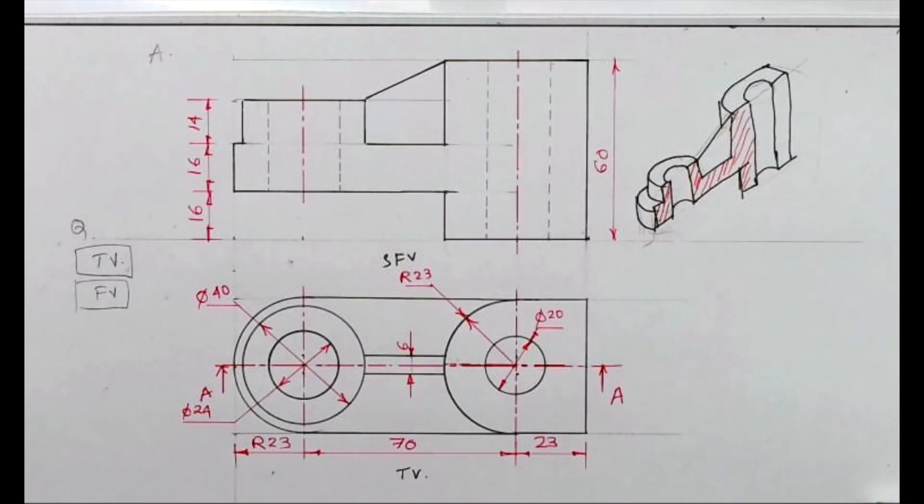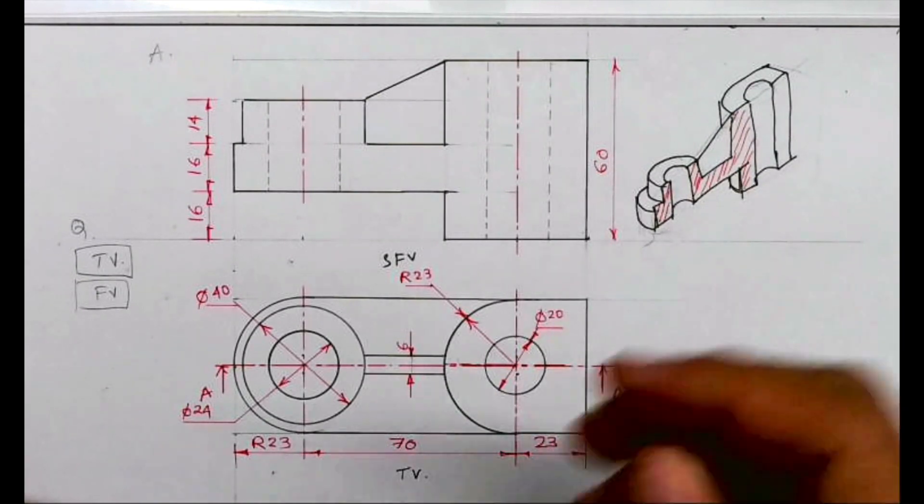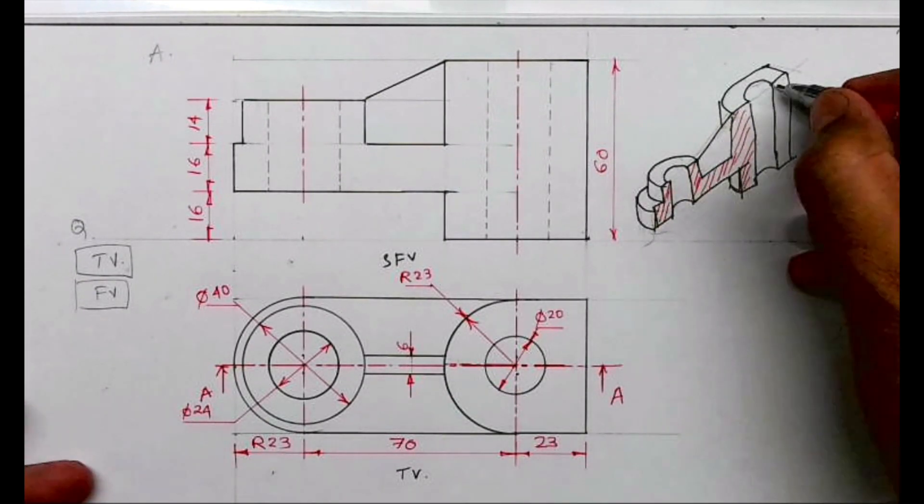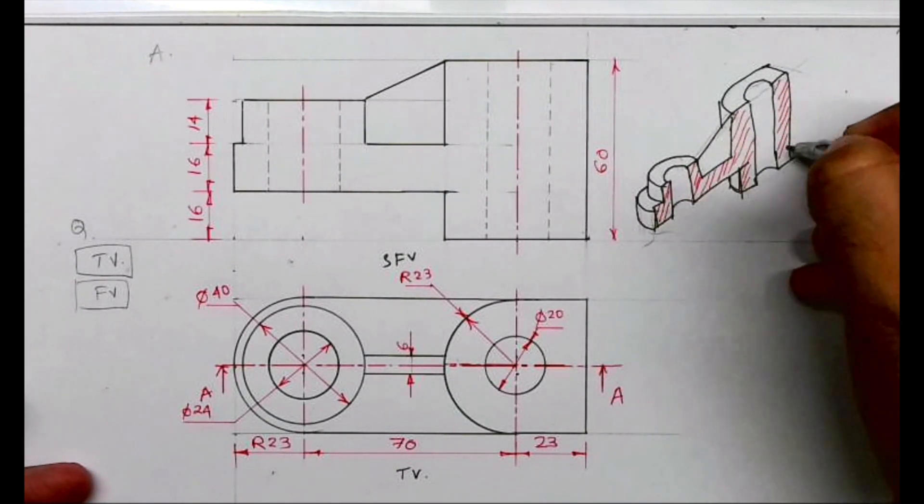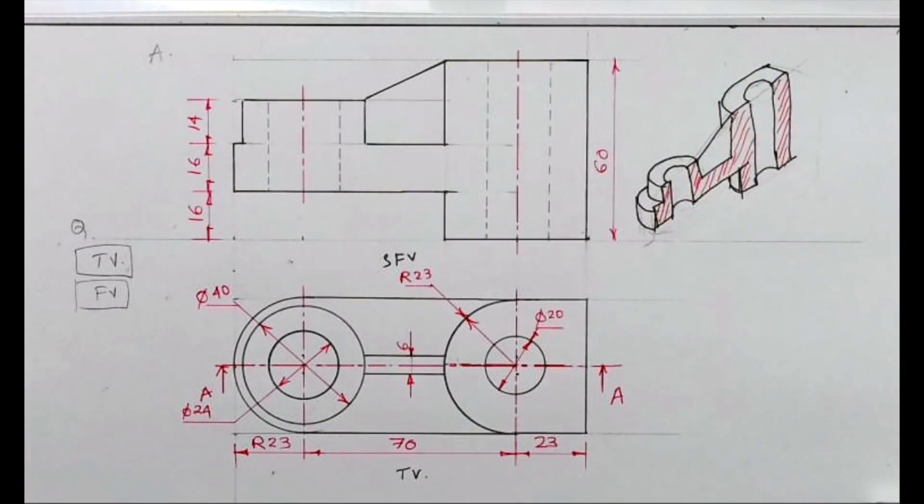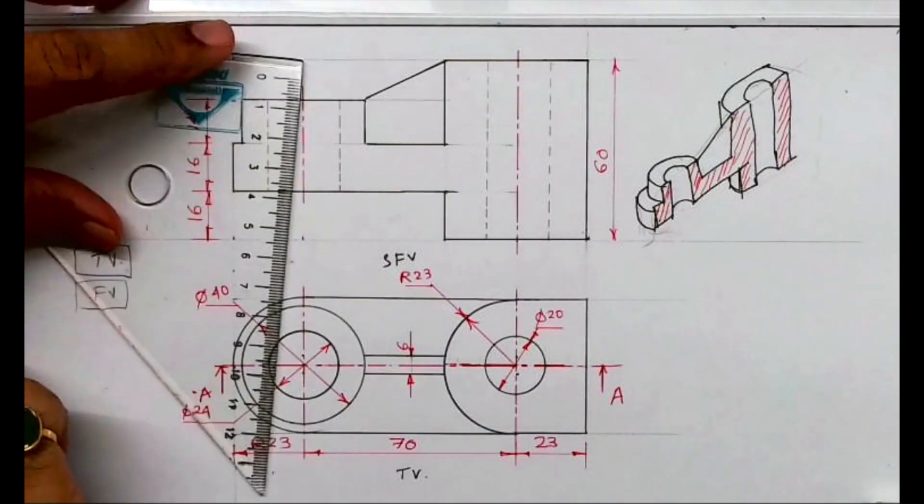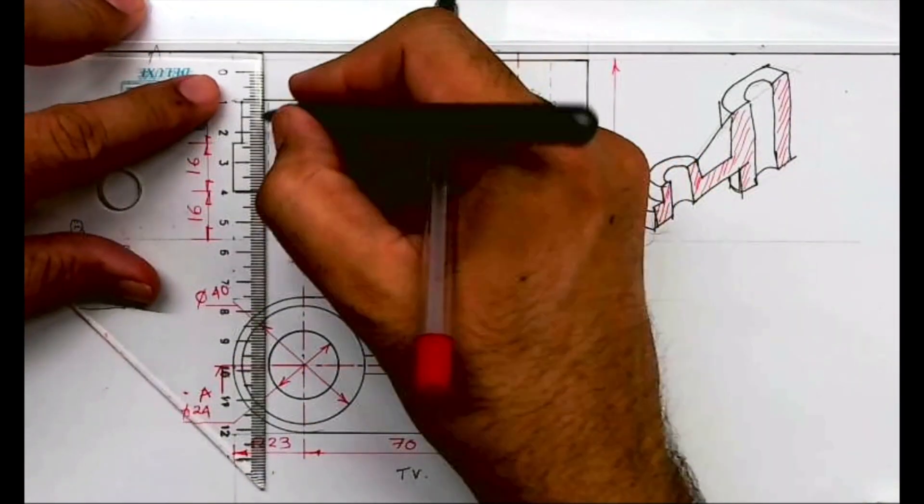This part will be hatched. So this is how sectional front view will appear. So what we can do is draw this dotted line darker, and then we can do hatching.